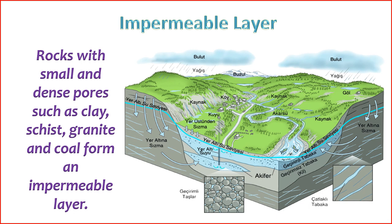2. Impermeable rocks: Impermeable rocks have low porosity and do not allow the free movement of fluids. They act as barriers, preventing the flow of water or other substances. Examples include shale and clay. Their compacted nature and lack of well-connected pores make it difficult for fluids to pass through. Impermeable rocks have low porosity, and the pores present may not be well-connected, resulting in a low capacity for fluid transmission.